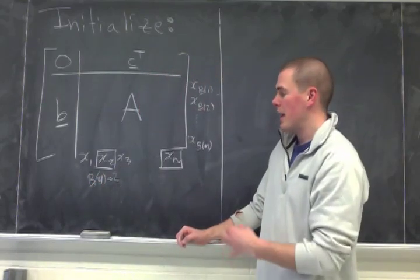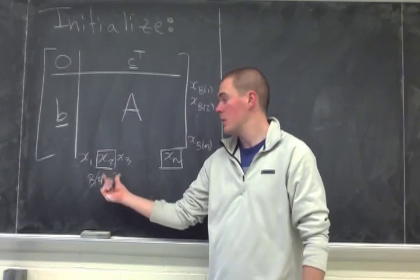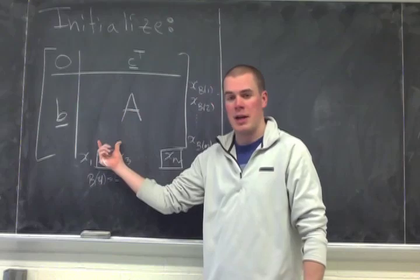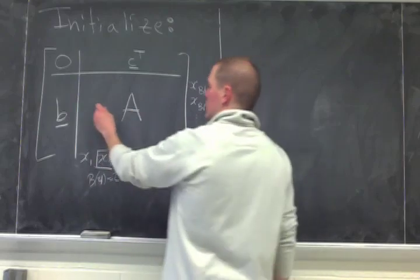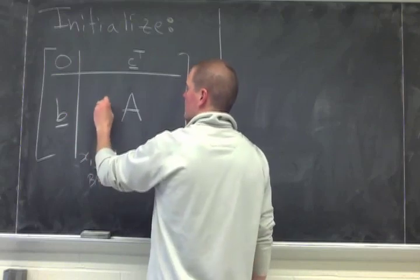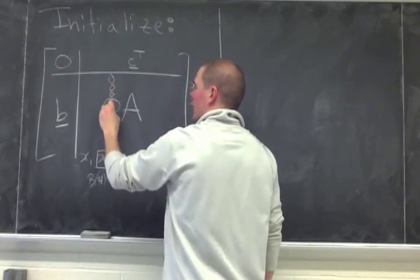If I have my fourth basis element is the second column which is corresponding to x2, what I will eventually want to have in here is the representation in our basis. So the goal is to have this be a 0, 0, 0, 1, 0, 0, 0, 0.